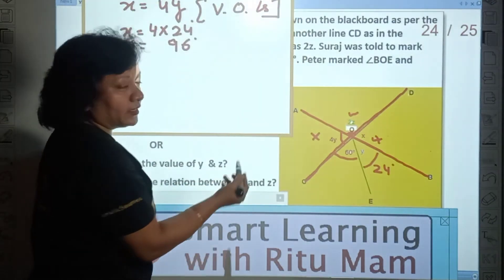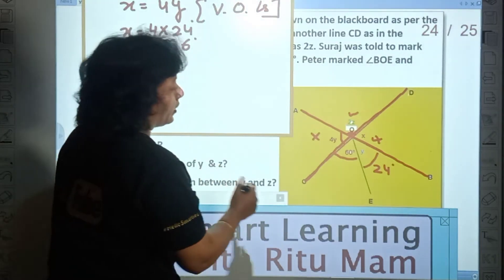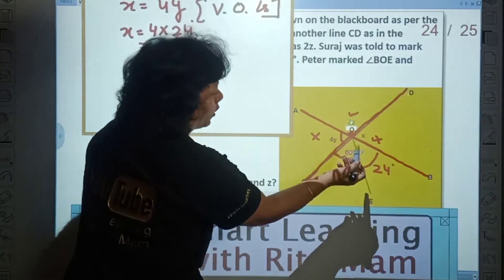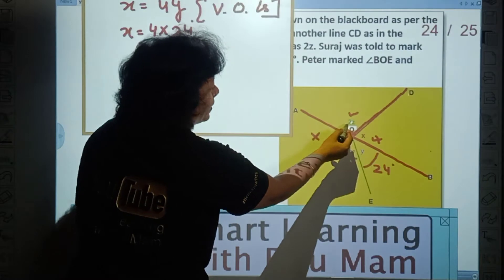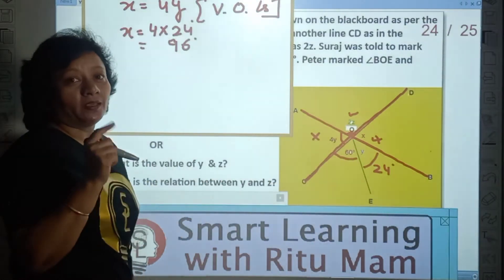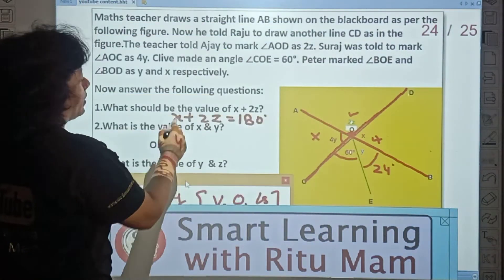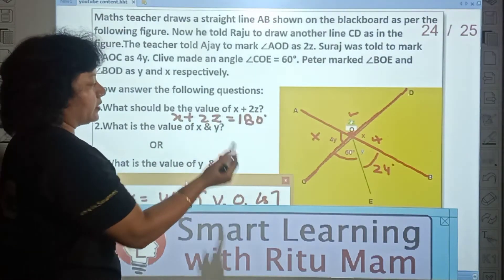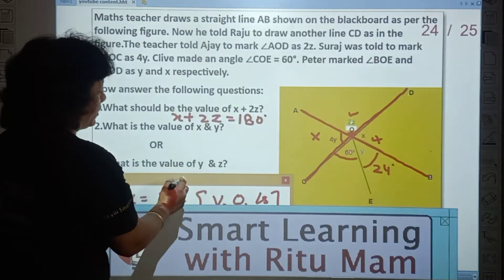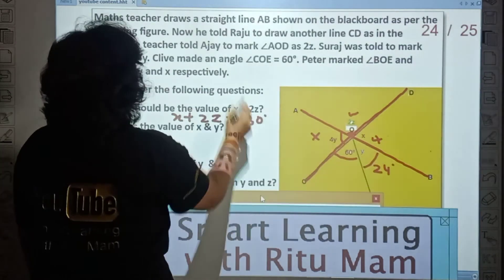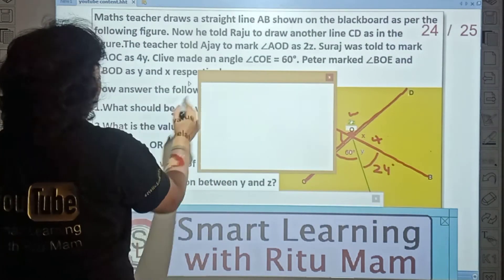Now let's see, Z can also be found. How will we find it? Look, there are many options. With the help of X. Z can also be found by linear pair. We just showed the relation between X and Z. What did we see? Put the value of X, Z will come.